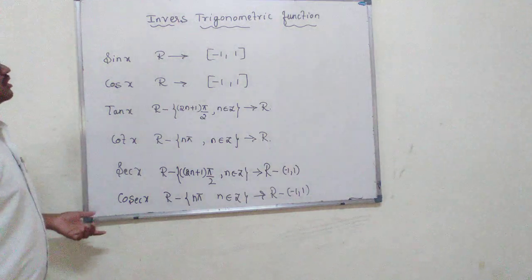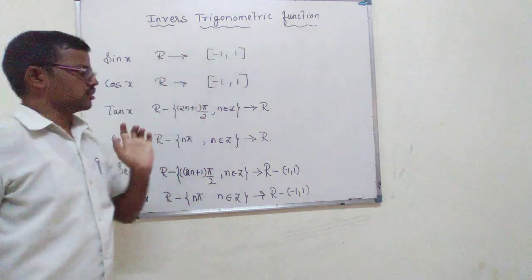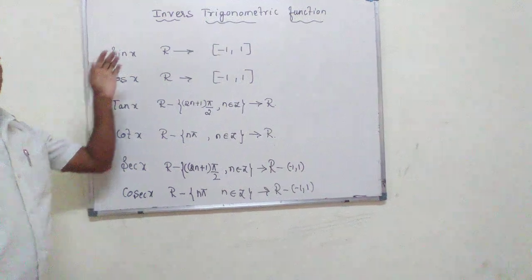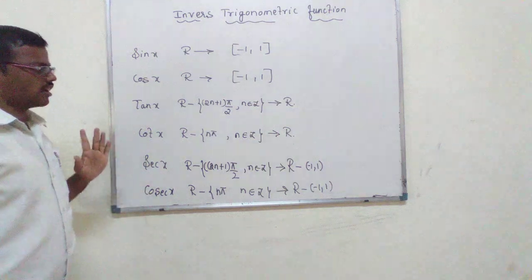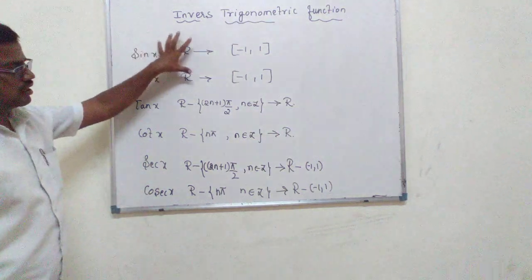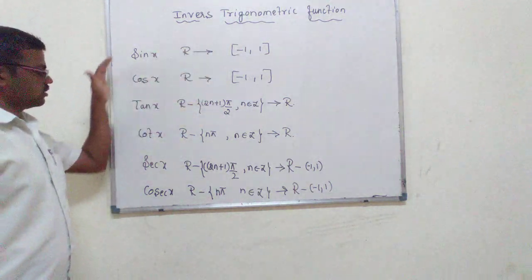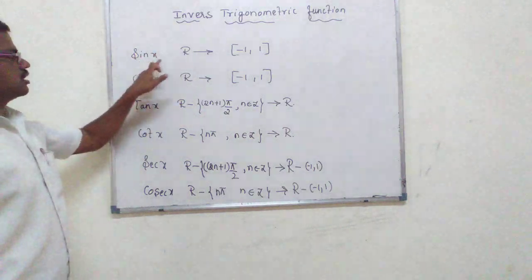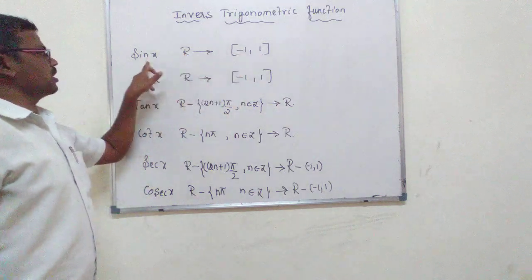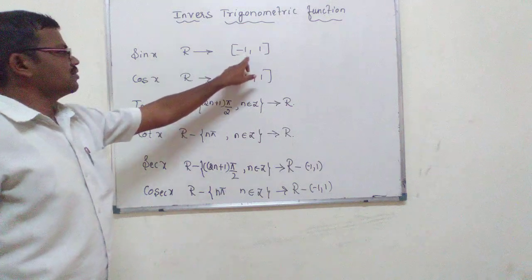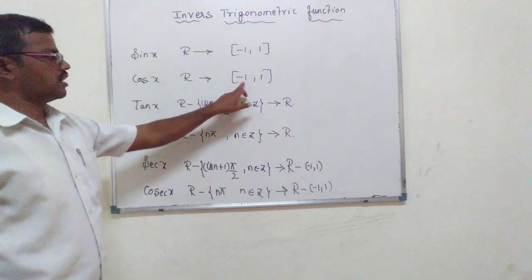Good morning students. We have come to a new chapter: inverse trigonometric functions. Yesterday we discussed sine, cos, and tan. These are very important. We have already studied these in the first year — that is, the domain and range of the trigonometric functions. Sine is a function from ℝ to [-1, 1]. The domain of sine is ℝ and the range is [-1, 1]. Similarly, cos has domain ℝ and range [-1, 1].